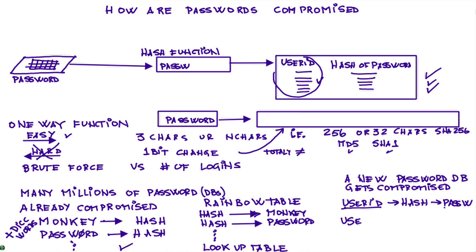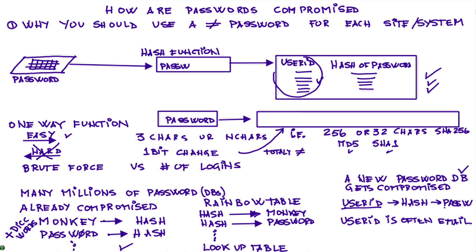Typically the user ID is often the email address of the individual. Now the attacker can go to site X or bank Y and try that email with the password they found from the compromised database — because chances are the person is reusing the same password, or a slight variation, across other sites. This is why you should use a different, unique password for every site and system. Using 'monkey123' on one site and 'monkey345' on another isn't enough — passwords need more entropy, more randomness, more like gibberish.